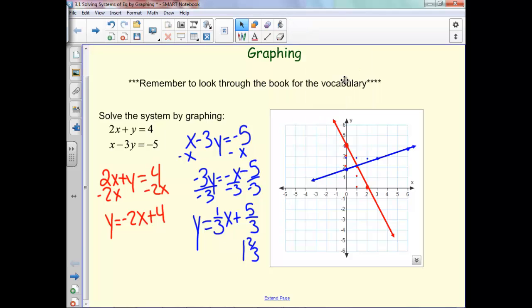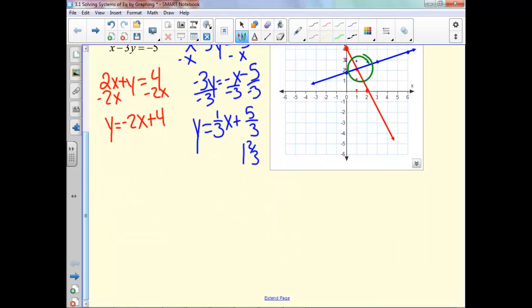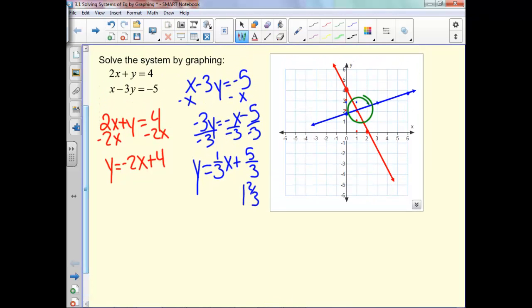So now we've got our two lines graphed. And when we solve these systems, what that means is we have to figure out where they intersect. What point do these two graphs have in common? If you notice, they have that point in common, because that's where they intersect. And so our solution is that point, 1, 2.